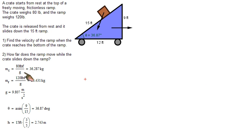So the mass of the crate in kilograms is 36.287. Mass of the ramp in kilograms, 54.31 kilograms. Gravity 9.807. Theta is the arc sine of the height divided by the hypotenuse of the ramp, which is 36.87 degrees. And the height in meters is 2.743.